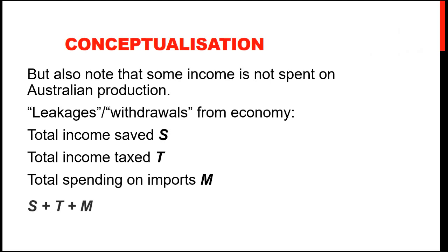The income that's spent or saved will be after-tax income, and then some of their spending is not on Australian goods and services but rather on goods and services produced somewhere else. So we have these leakages or withdrawals — income that is not spent on Australian goods and services — and that is S plus T plus M: savings plus taxes plus import spending.